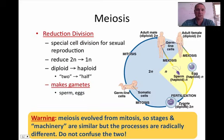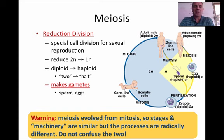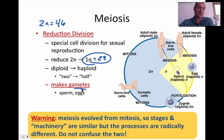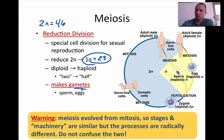Meiosis is called reduction division because not only are you dividing the number of cells, you're also reducing the chromosome number. Our diploid number, our 2N number, is 46. What we're going to do is go from a cell that has 46 chromosomes — a diploid number — to a cell that has a 1N number of 23. This will be our gametes, our sex cells. Diploid, the 2N, means 2 sets of all the chromosomes. Haploid means you have half of the chromosomes.